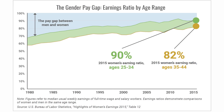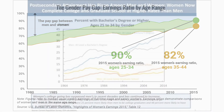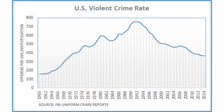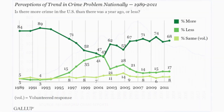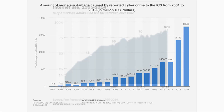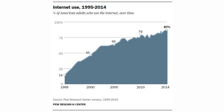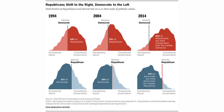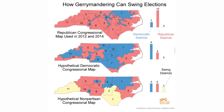Women have made economic gains, but the wage gap between women and men still exists. Women are likely to make further economic progress due to a higher percentage obtaining bachelor's and graduate degrees than men. After decades of rising violent crime in the U.S., it has declined. However, the perception is otherwise. The perception of the growth of crime is true with respect to cybercrime. Internet use has increased dramatically and is changing many aspects of life. Individuals are increasingly obtaining their news from social media and TV channels that support their viewpoint. The U.S. has become increasingly partisan on most major issues. Over time, Democrats have become more liberal and Republicans more conservative. The gridlock in Congress has been due in part to gerrymandering.